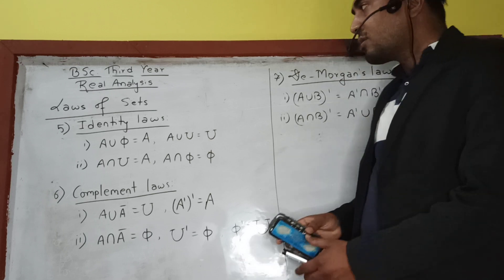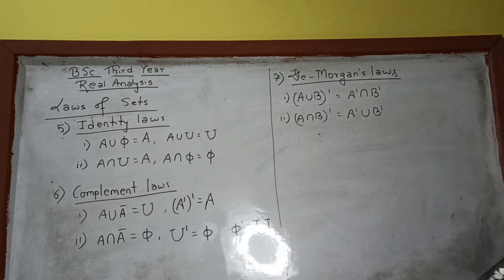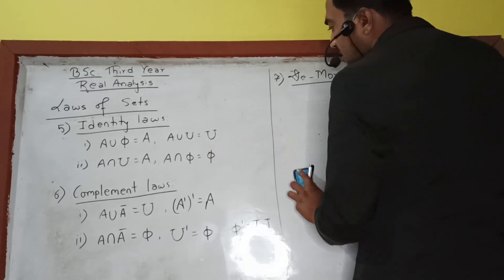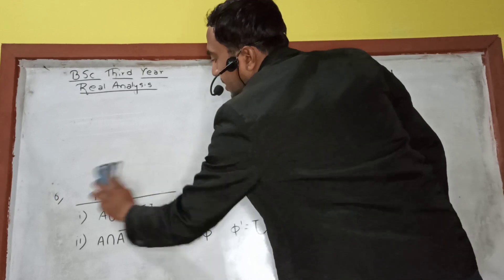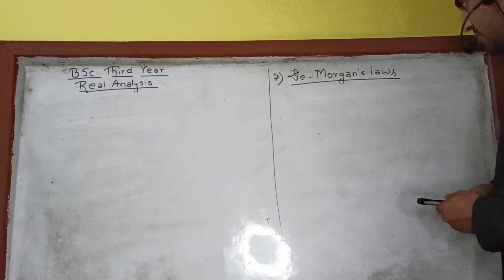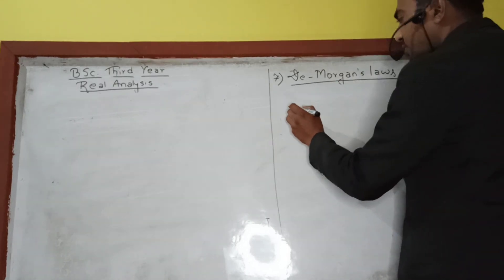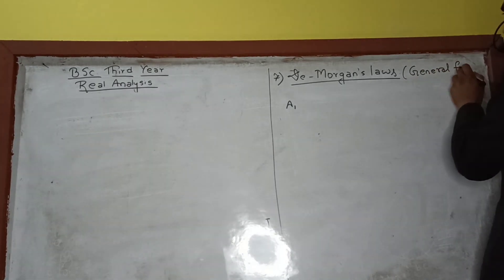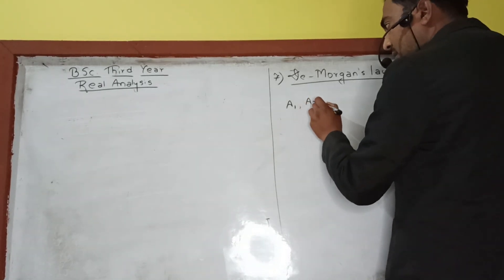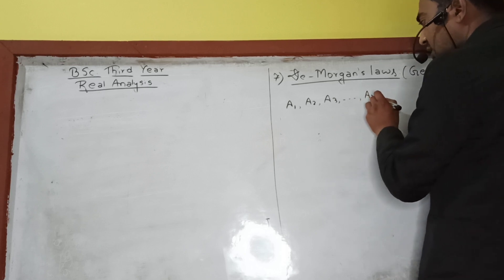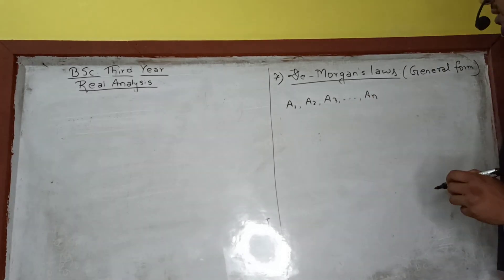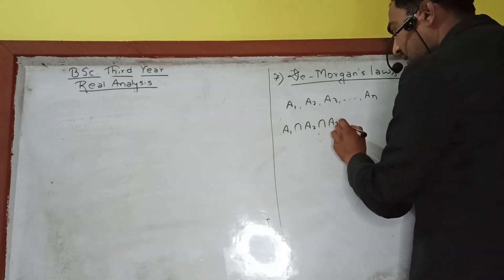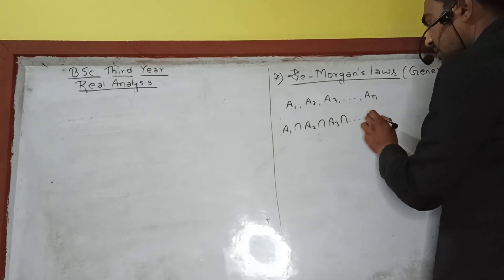Now the general form of De Morgan's law. Suppose we have many sets — the general form applies to n sets.